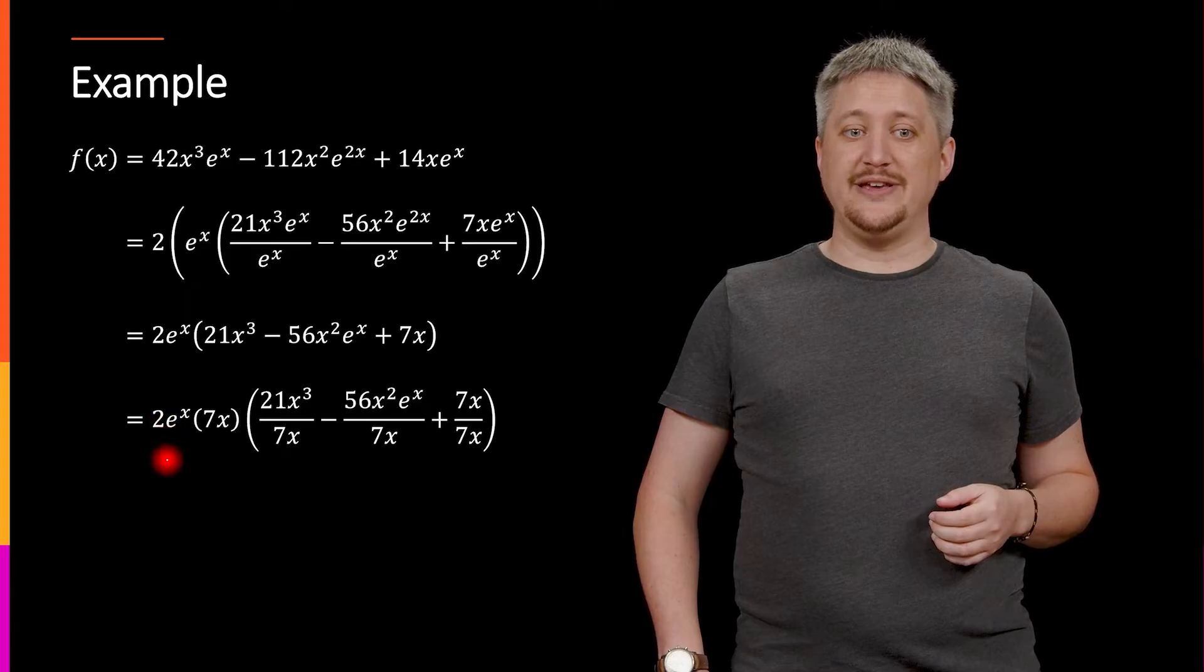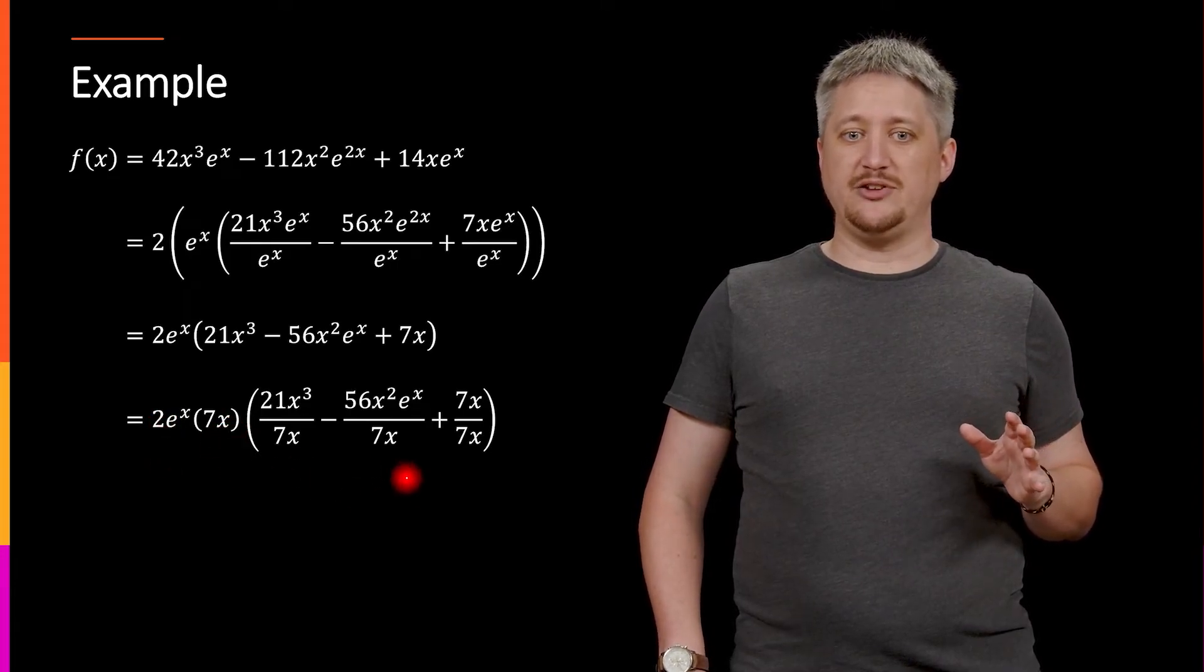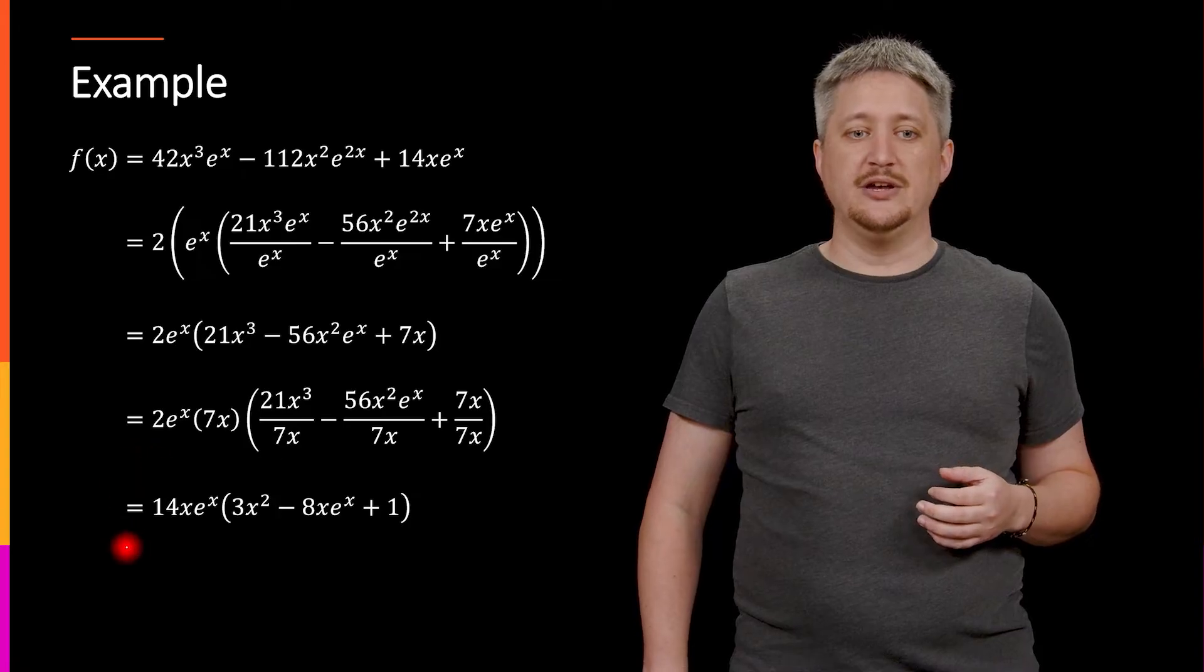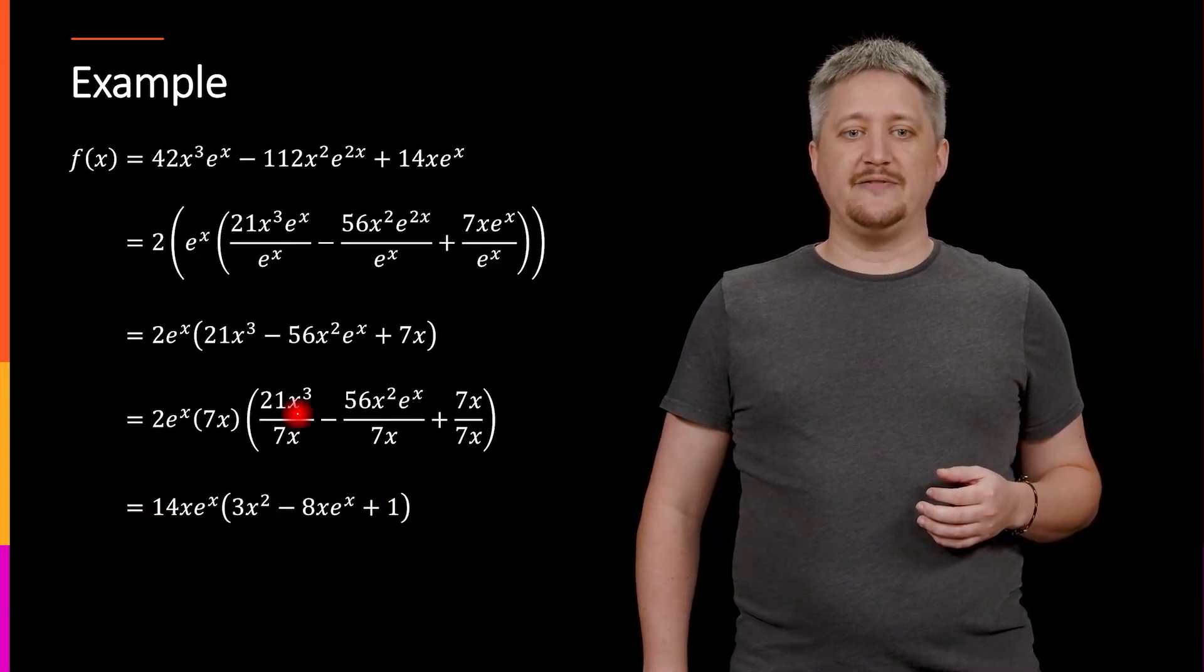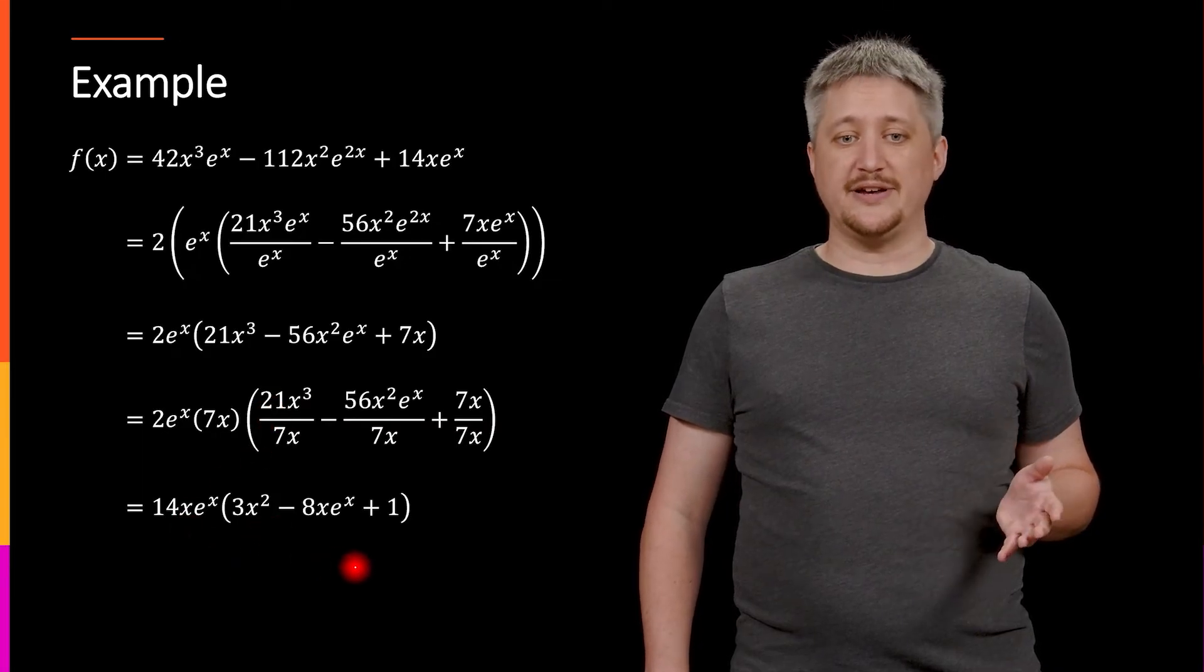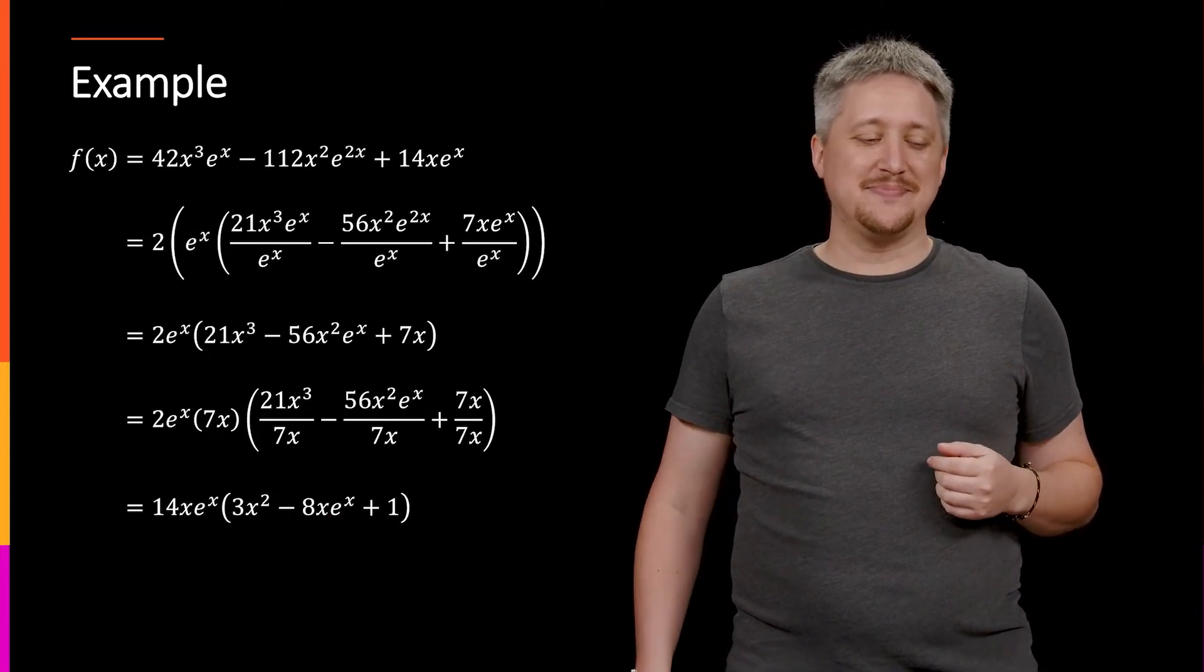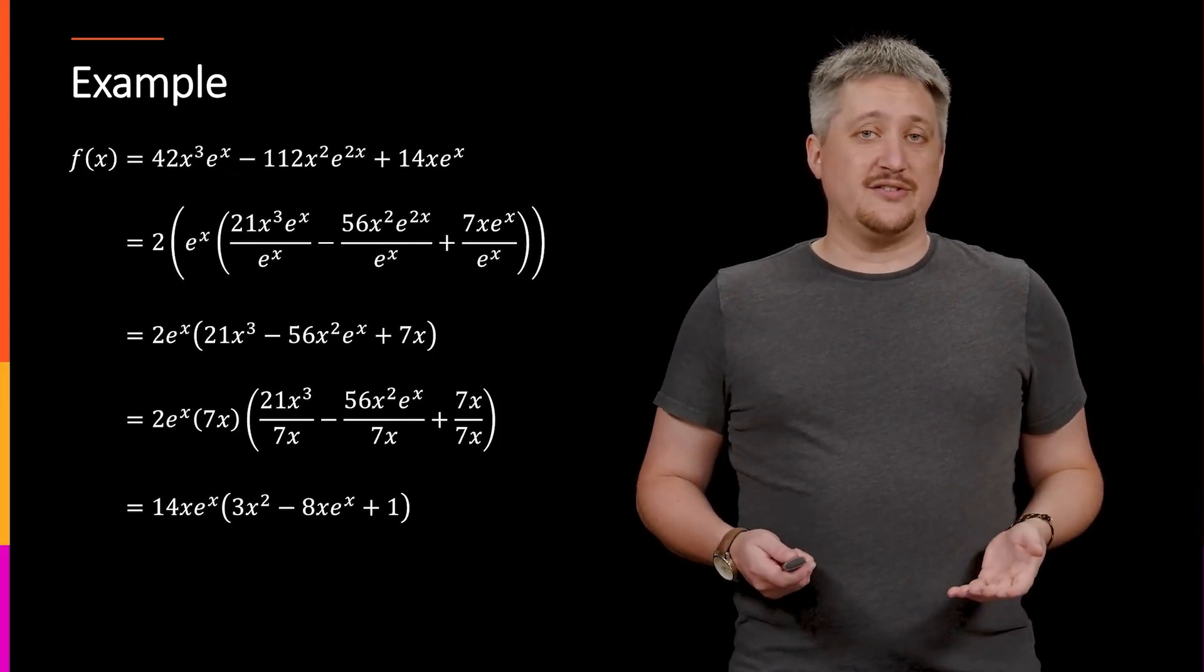So that gets me that 2e^x is still floating out there, I pulled out a 7x, I divided it out of each piece. And doing that gets me down to this expression. So I can merge the 7x and the 2e^x which is how I get that 14xe^x. And then I divide out these pieces which is how I get this 3x² - 8x - 8xe^x plus 1.